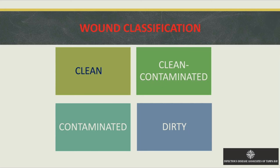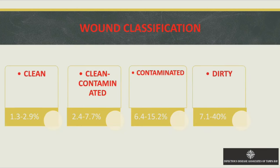You can classify wounds into four types: clean, clean-contaminated, contaminated, and dirty. The rates of surgical site infections correlate to these wound classes. Clean wounds have about 1.33% SSI rate, clean-contaminated is higher, contaminated is about 15%, and dirty wounds can be up to 40%.